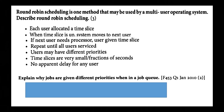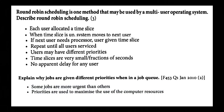If you're wondering why the P is cut off a bit, that's because this is from the revision guide — I had to take some screenshots from it. Explain why jobs are given different priorities when in a job queue: some jobs are more urgent than others; priorities are used to maximise the use of computer resources. That's two marks, so you need to get those exact points.